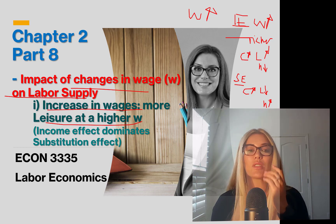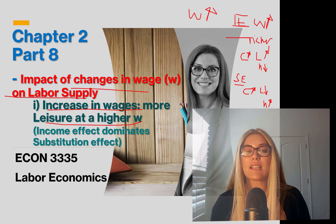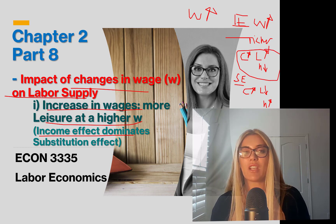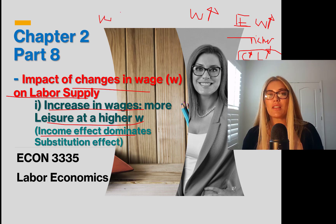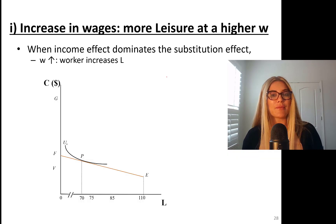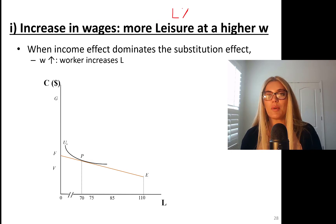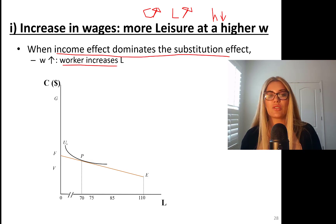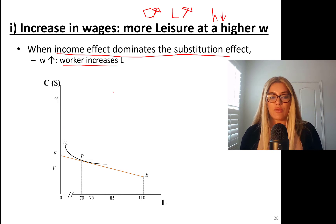The most important thing is that income and substitution effects actually happen at the same time. In this case, we're going to show the income effect dominating the substitution effect. So we're going to show consumption going up, leisure going up, and hours going down when wages go up. Worker increases leisure, decreases hours of work, and consumption will go up.